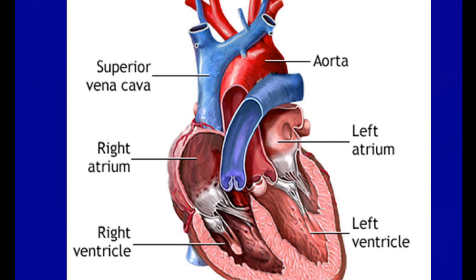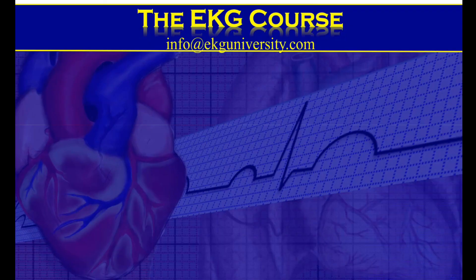That is the basic anatomy of the heart. There are more complex things to understand — for instance, the AV valves are attached by structures called chordae tendineae, which attach to papillary muscles. The tricuspid valve has three chordae tendineae and the bicuspid has two. Of course, there is also a complex conduction system that we're going to talk about shortly. That concludes Part 1 of Chapter 1. Please continue on to Part 2.